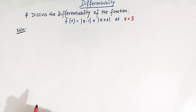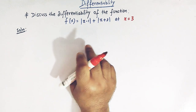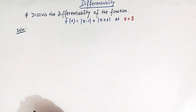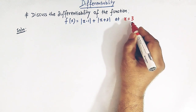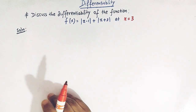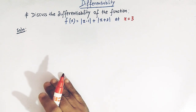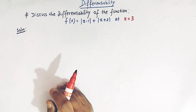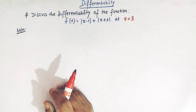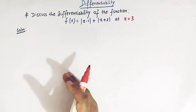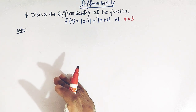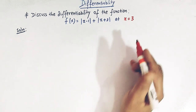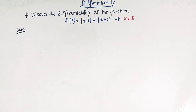To test the differentiability of this function, we will find the right hand derivative and the left hand derivative at x = 3. If both coincide, we can claim the function is differentiable at x = 3. If they do not exist or are not equal, then the function is not differentiable at x = 3.